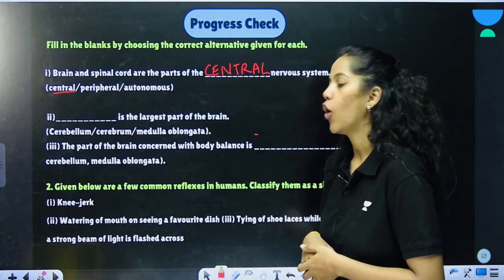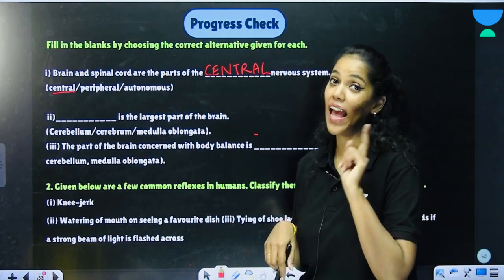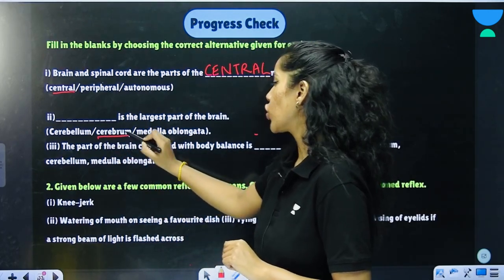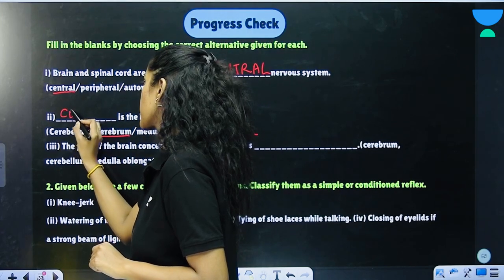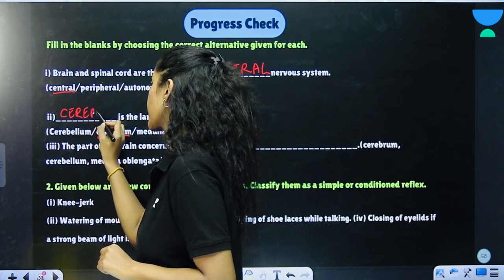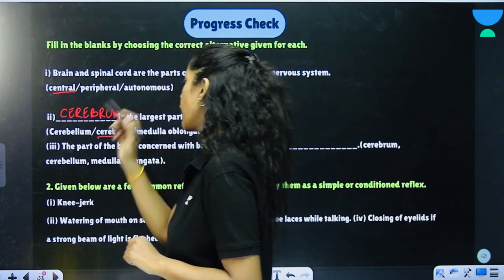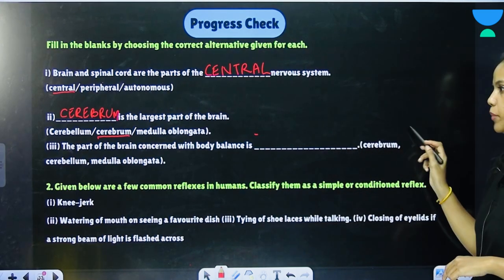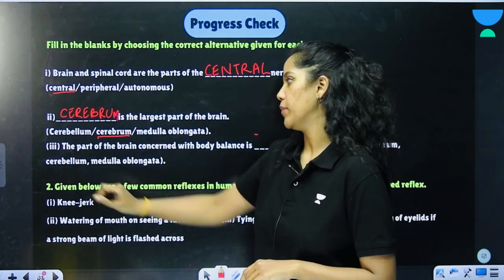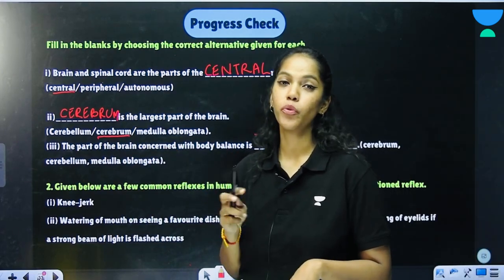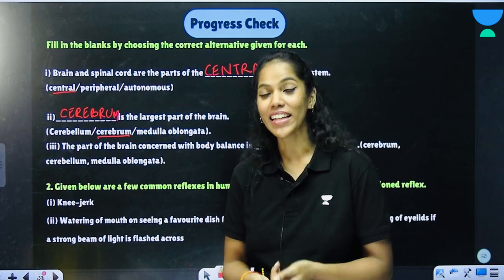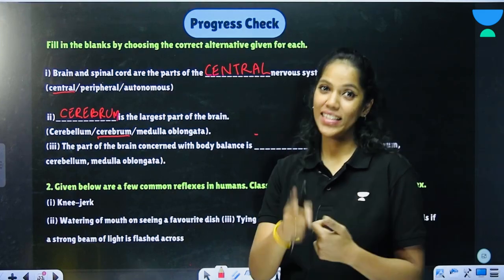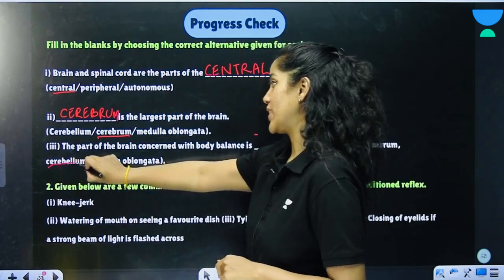___ is the largest part of the brain. The answer is the cerebrum. Next: the part of the brain concerned with body balance is ___. Is it the cerebrum, the cerebellum, or the medulla oblongata? Remember that a drunk person walks in an imbalanced way because alcohol affects the cerebellum. So the answer is the cerebellum.